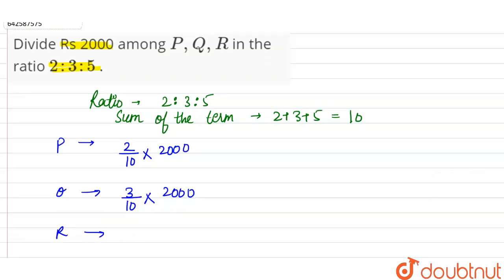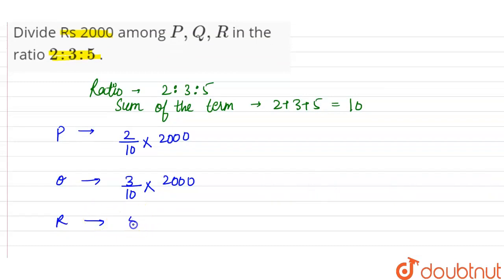Similarly, R's share will be equal to 5 divided by 10 into 2000. So 10 will be cancelled with 10, 10 cancelled with 10, and similarly 10 will be cancelled with 10.